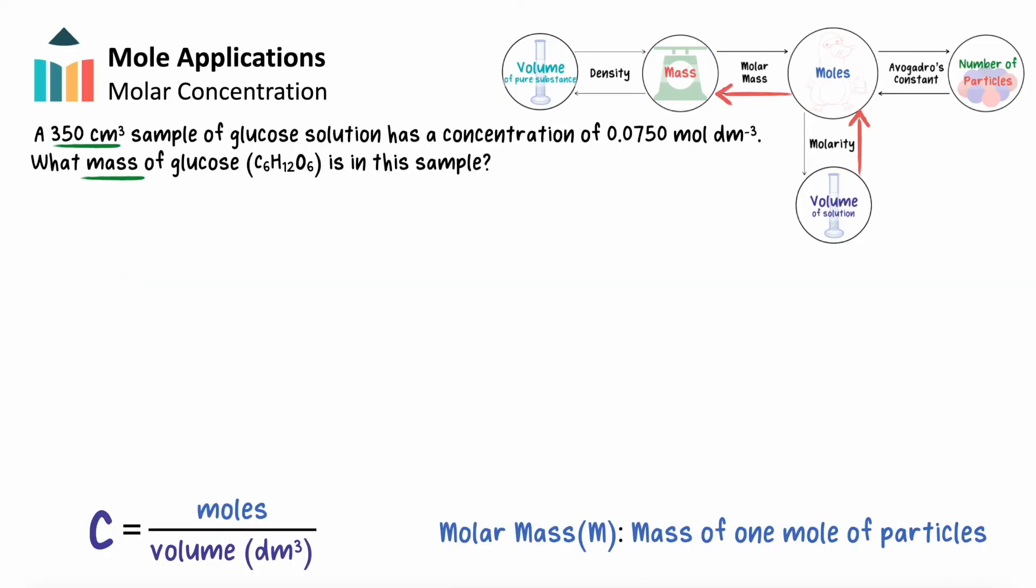Remember that we use moles as a way to count molecules in bulk. Having concentration measured as molarity gives us a ratio of counted molecules to volume of solution. If we plug in our numbers, making sure to convert volume into decimeters cubed, we can use this ratio to find the total moles of glucose in the solution sample. We've used concentration to separate information about glucose from the solution.